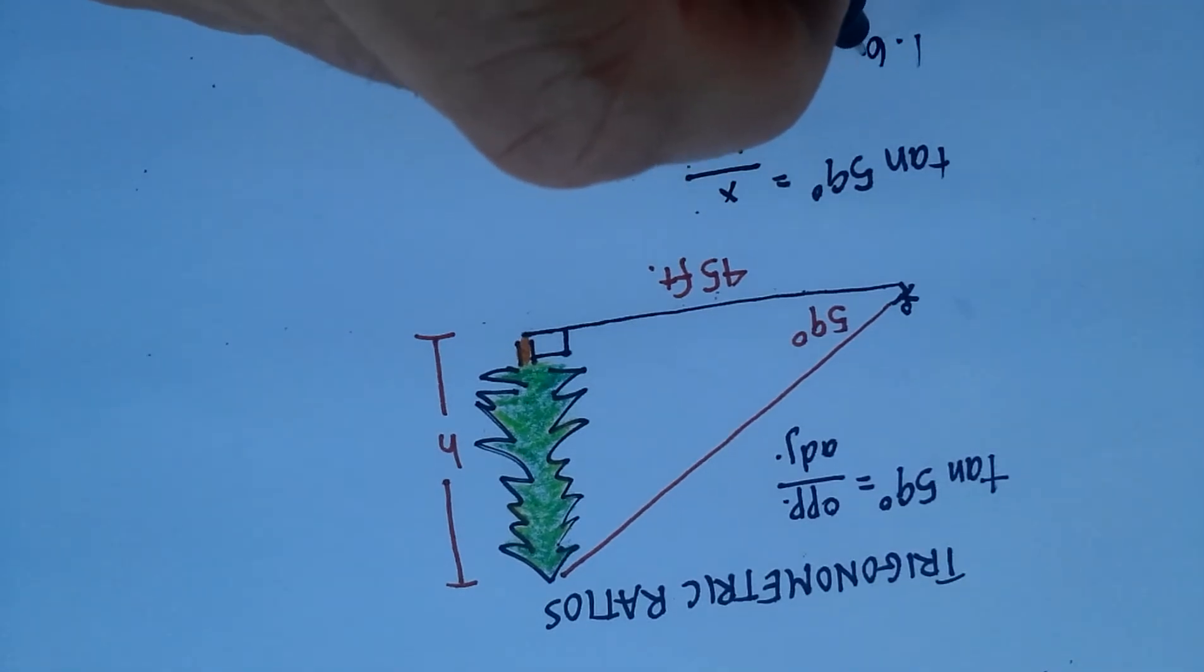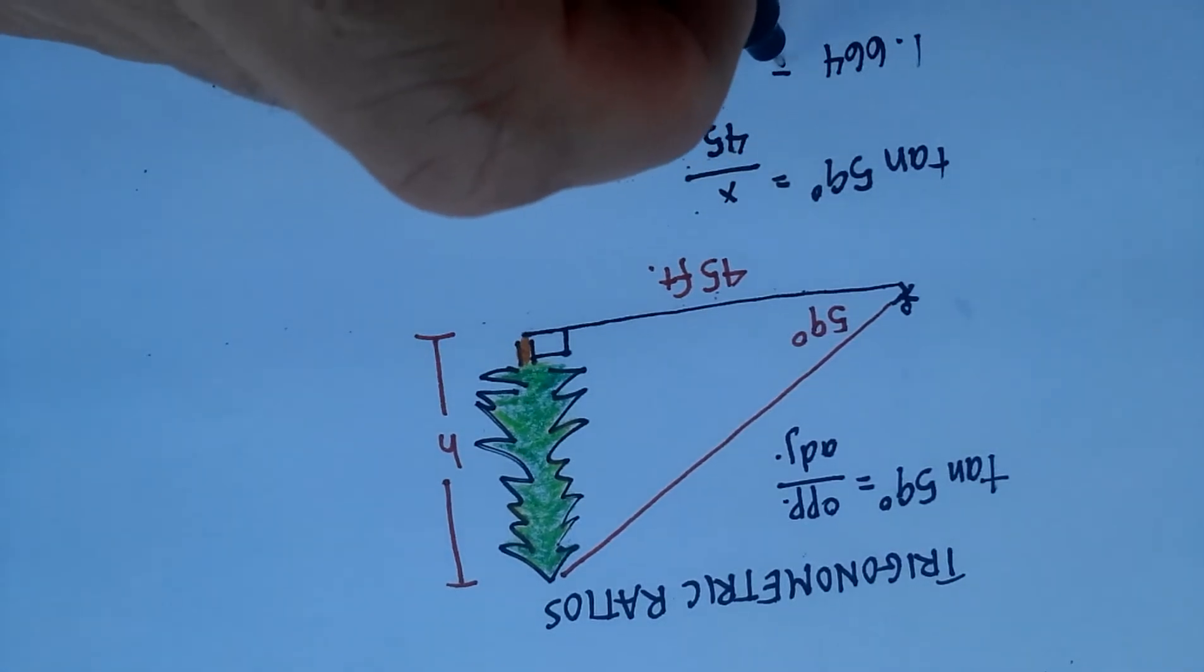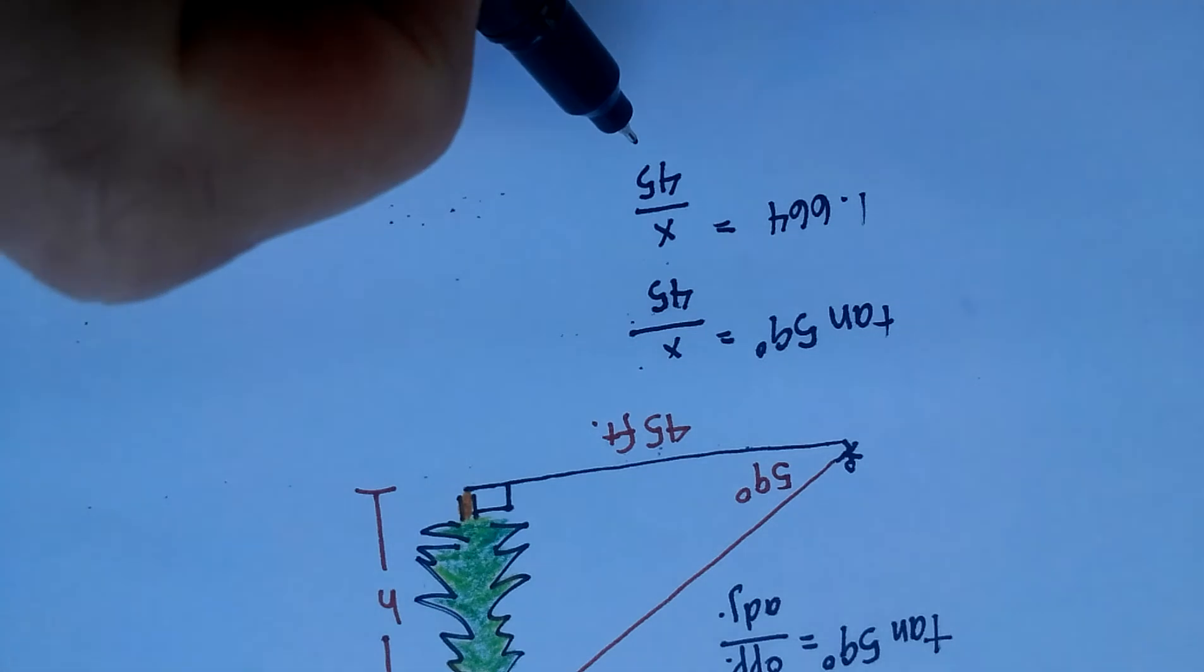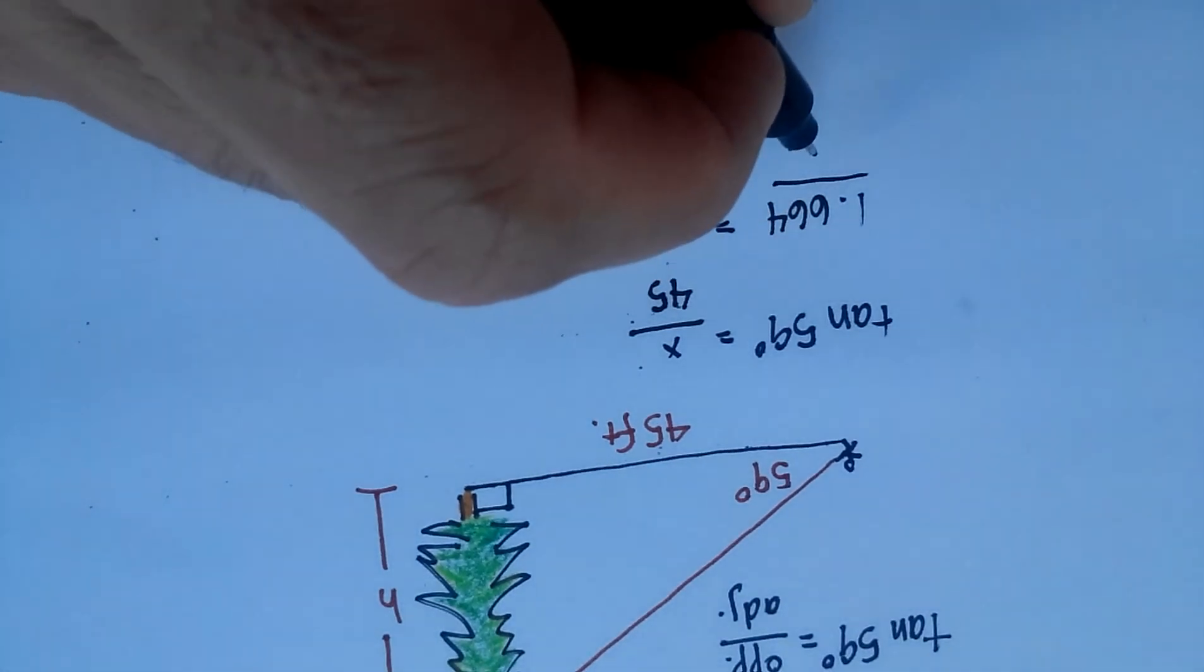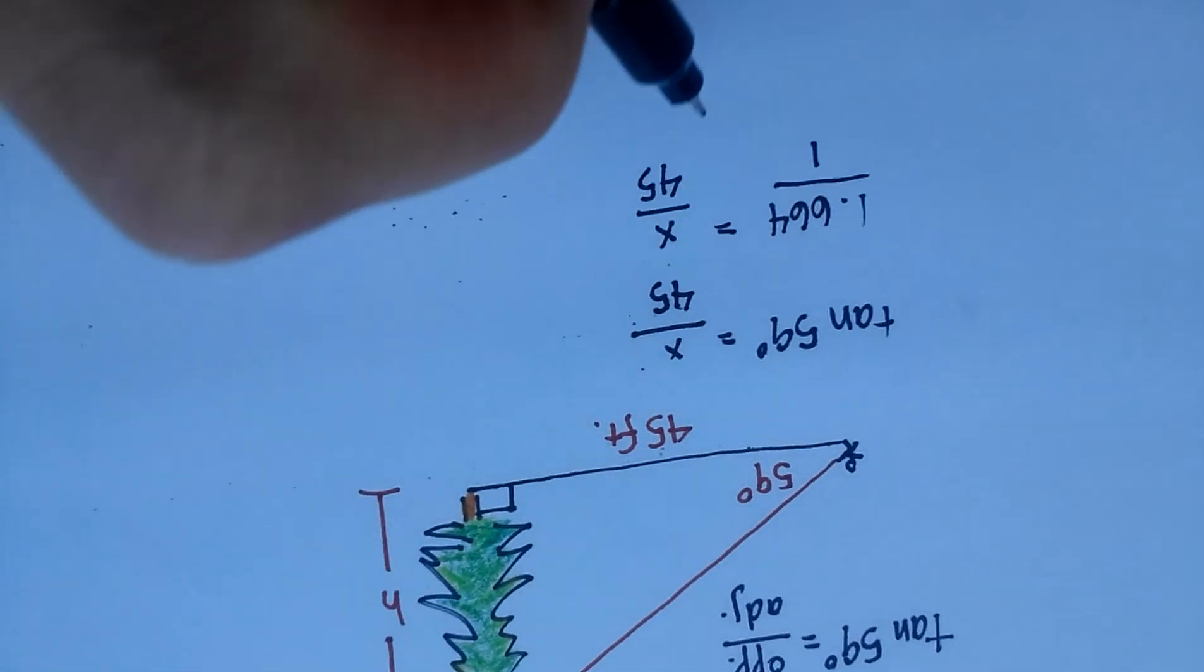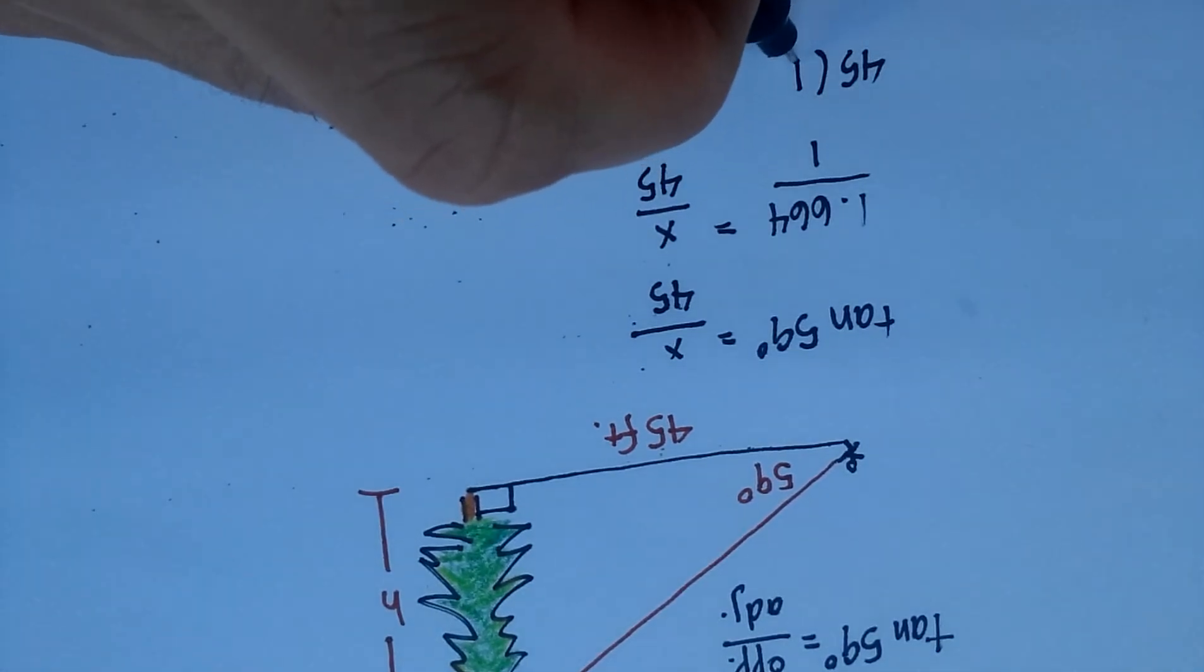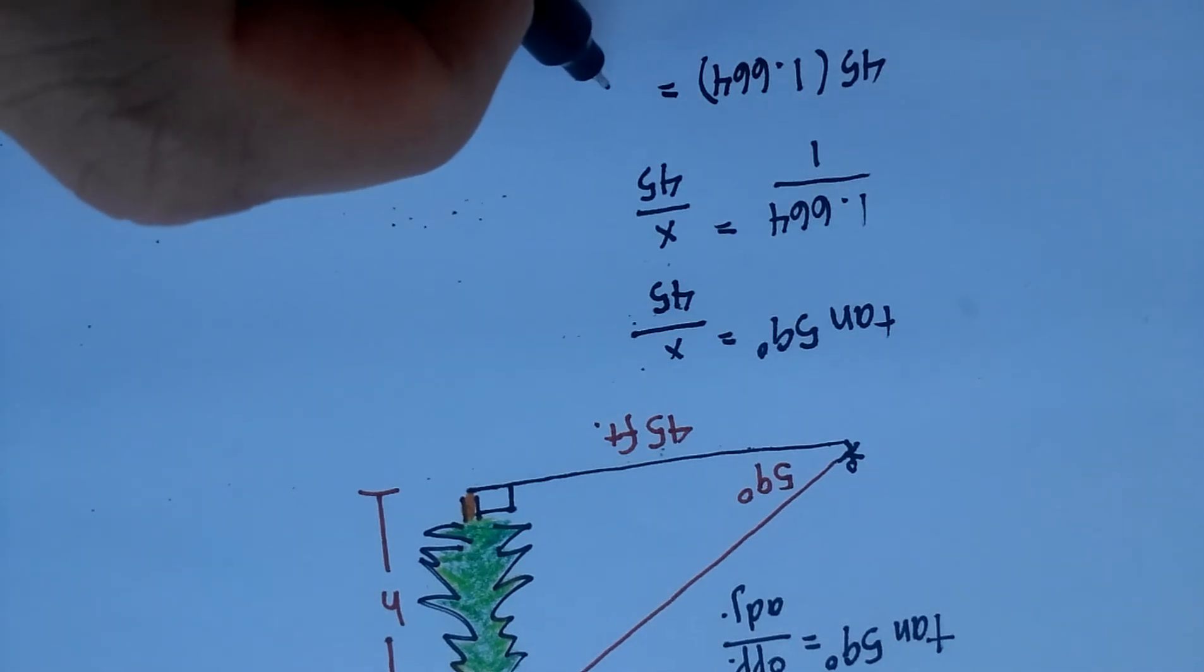1.664 is equal to x over 45. And remember how you solve these. You can do cross products. So you get 45 times 1.664 is equal to x.